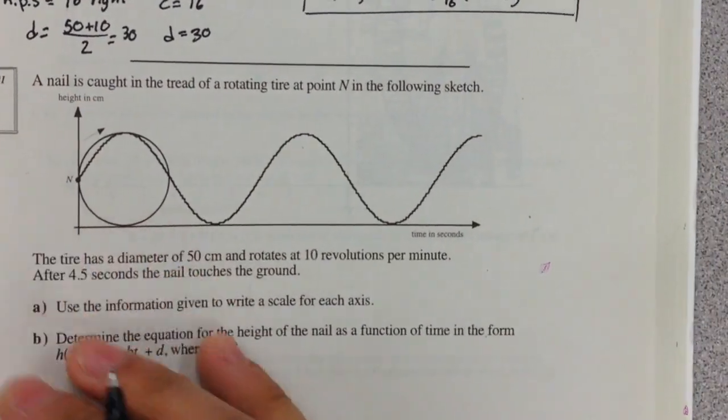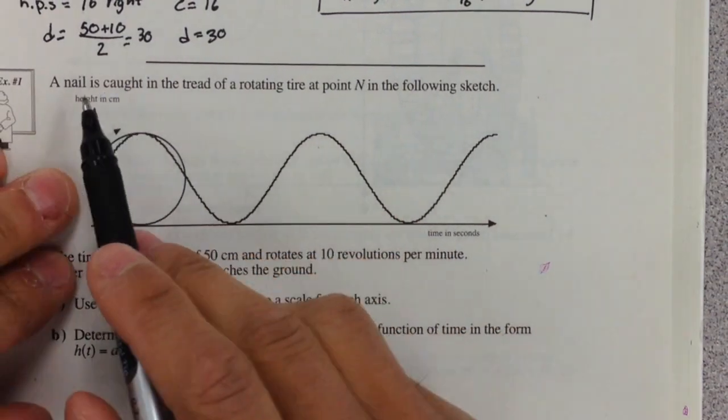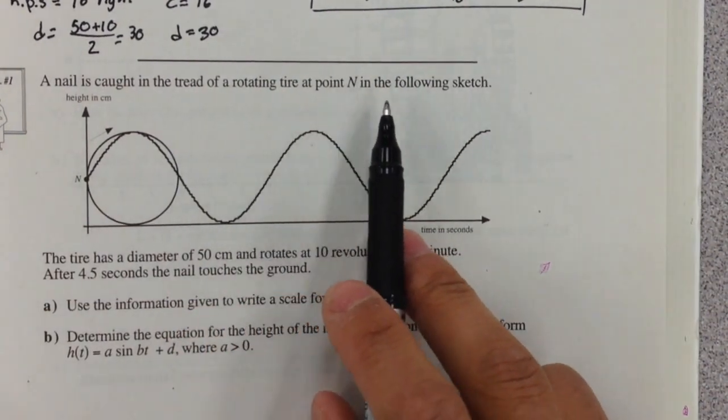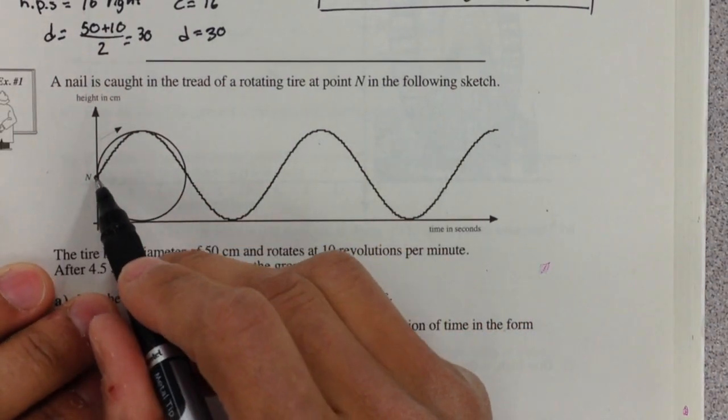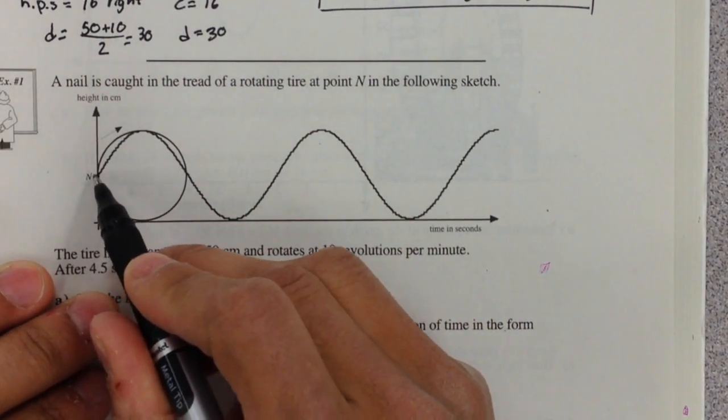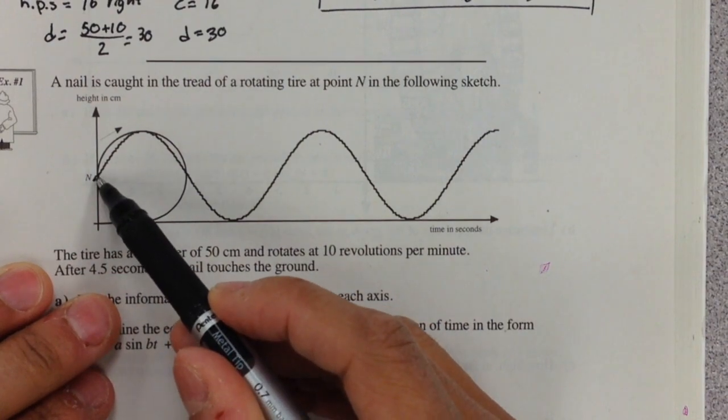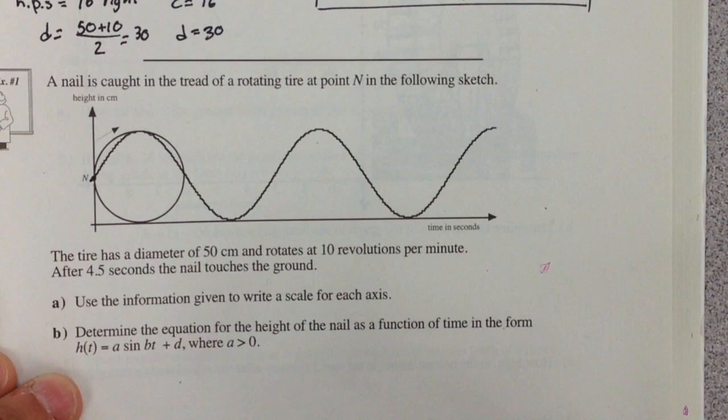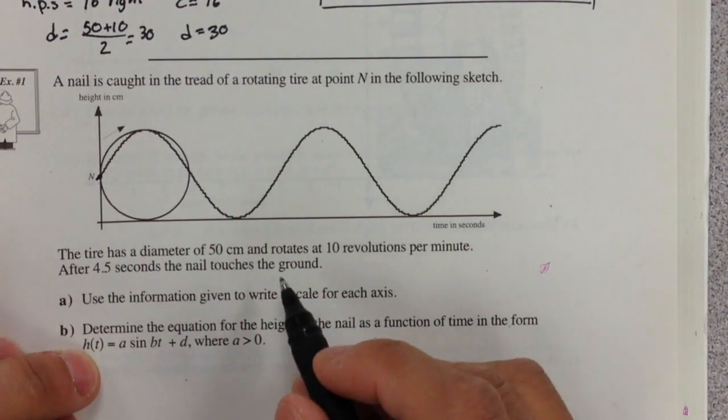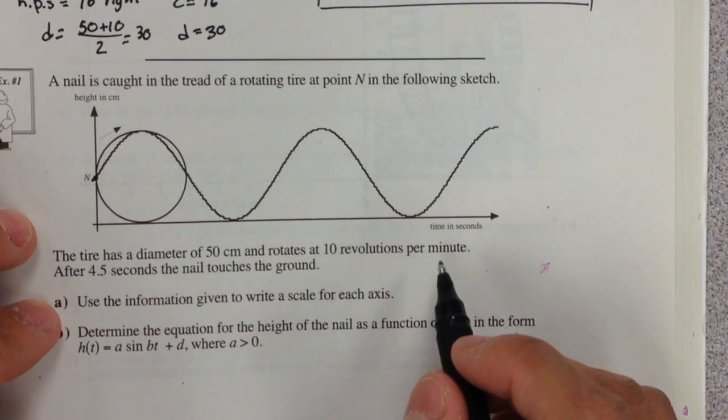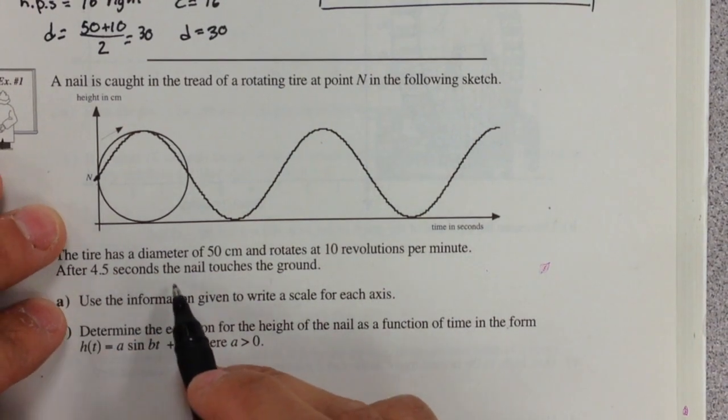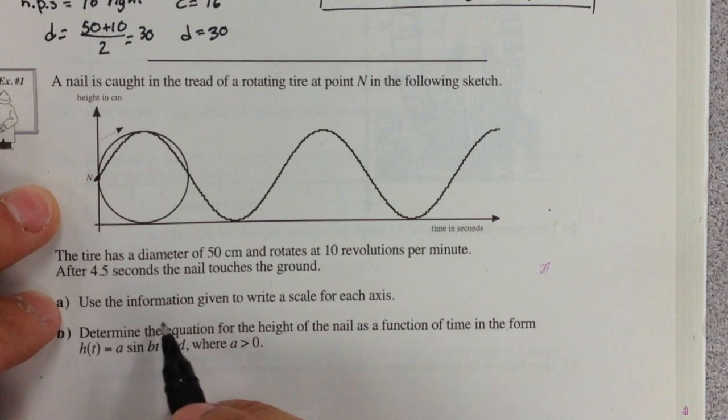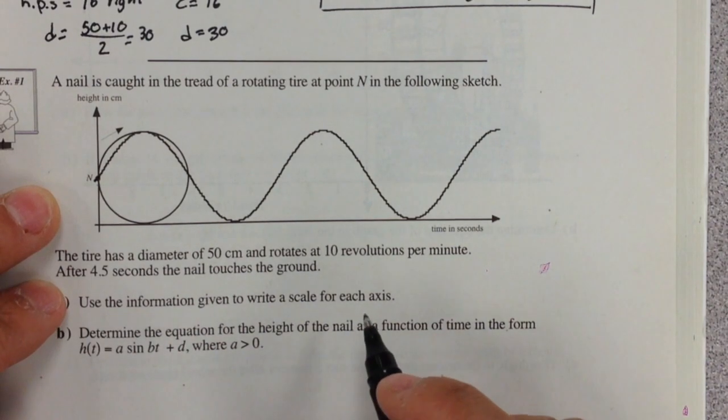Next we have this classic example number one. A nail is caught in the tread of a rotating tire at point N in the following sketch. As it's caught in this tread, it moves up according to this wave. The tire has a diameter of 50 centimeters and rotates at 10 revolutions per minute. After four and a half seconds, the nail touches the ground.